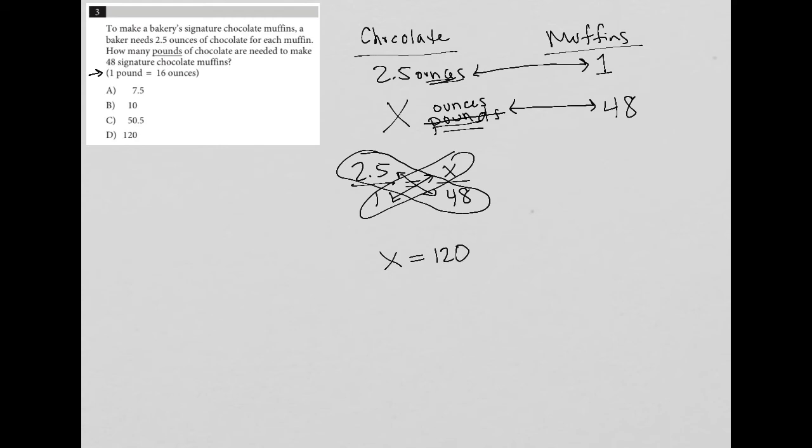Now, don't forget this X is representative of 120 ounces. So don't run and think that D is the right answer. D is actually not correct because we have the unit of ounces. The question wanted the answer in pounds, and it actually underlines it so that you don't forget that.